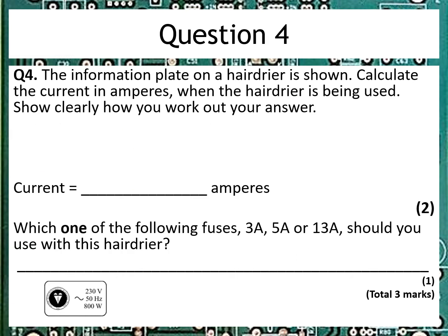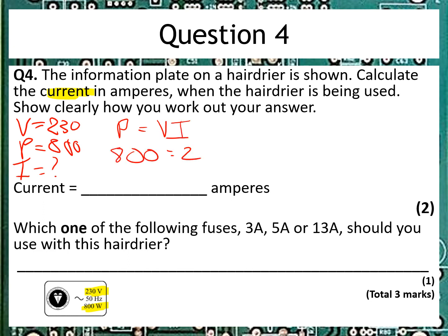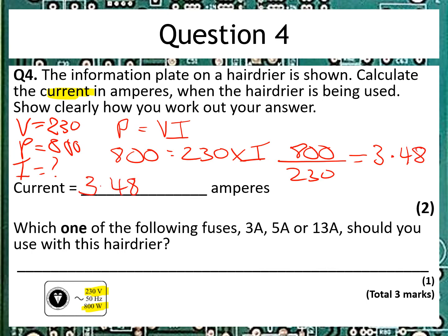The information gives us 230 volts and 800 watts — the frequency is irrelevant for this particular question. So we've got V equals 230 and P equals 800, and we're asked to find the current. We're going to use P equals VI: 800 is equal to 230 times I. We reverse the maths — 800 divided by 230 gives us 3.48 to two decimal places. The units are already given. The second part asks which fuse to use. The fuse has to be higher than the current we've got flowing through, otherwise the thing won't work. So it must be the 5 amp fuse.